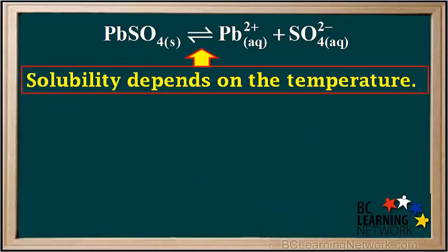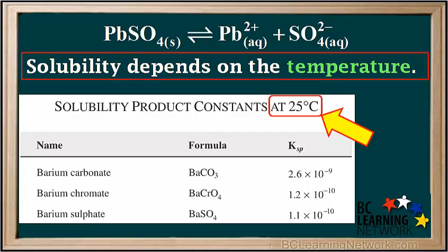Because solubility always depends on temperature, values of Ksp are given with the temperature specified. For example, the table of solubility product constants in the BC Chemistry 12 data booklet lists Ksp's at 25 degrees. Unless otherwise stated in Chemistry 12, we can assume that all given Ksp's are at 25 degrees Celsius.